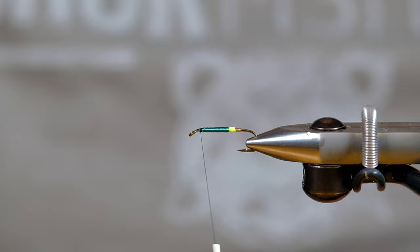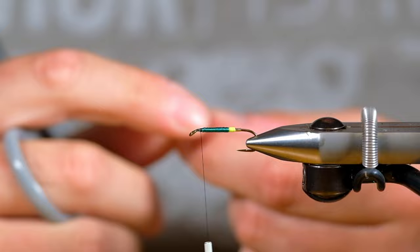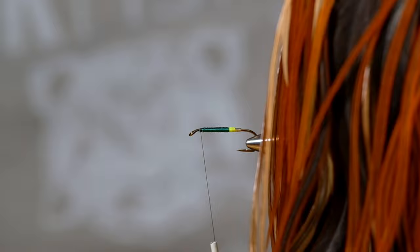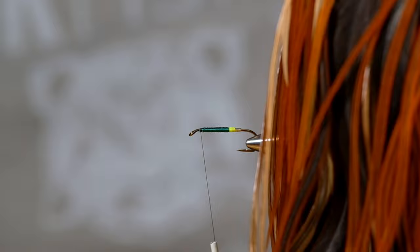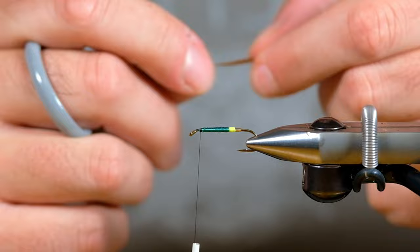All right, another thing that's used very differently on this pattern depending on the tier. I couldn't even tell you what the original hackle is on this, but I will say this: I really love furnace saddle on this. And this is a Whiting Pro-grade furnace. So we're going to tack in at the butt end of this hackle.